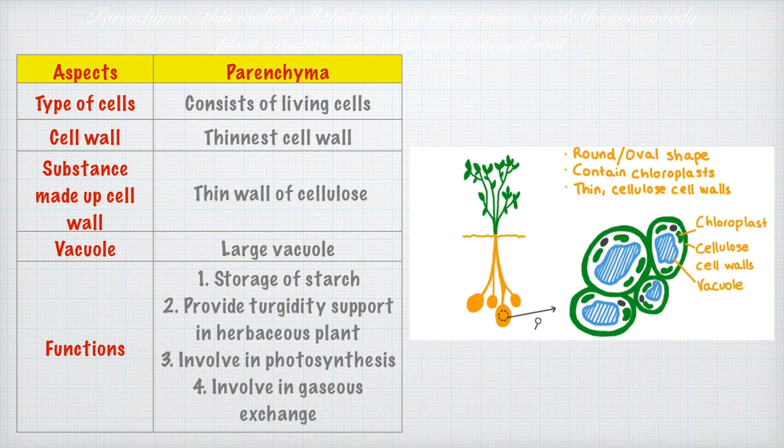Now let us look at each ground tissue individually. The first one is parenchyma tissue. Parenchyma tissue consists of living cells that are not yet differentiated. The cell wall is the thinnest among the three types of ground tissue. The substance that makes up the cell wall is only cellulose, and the vacuole is large in size.